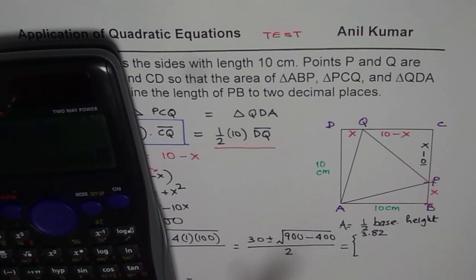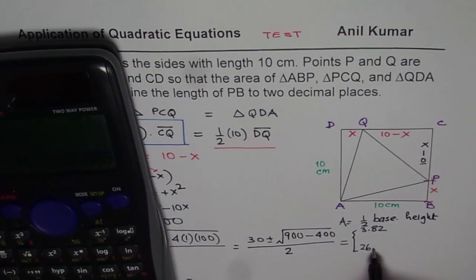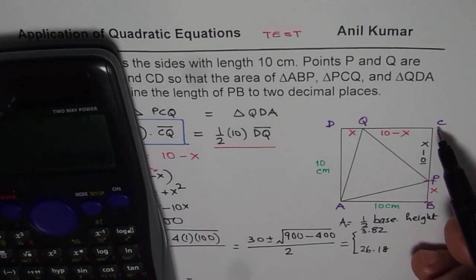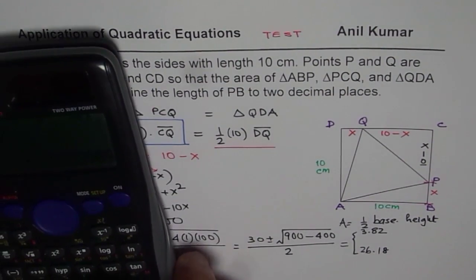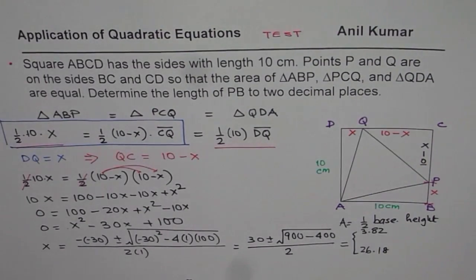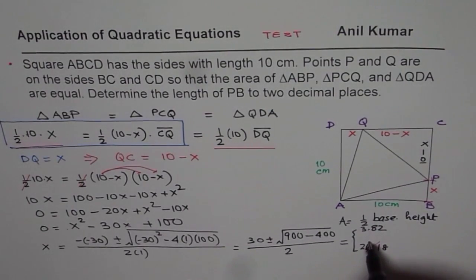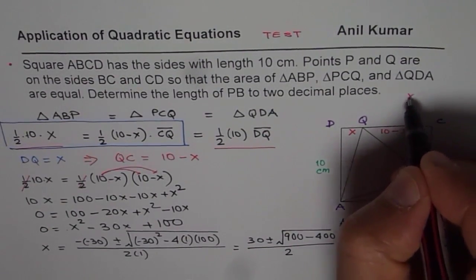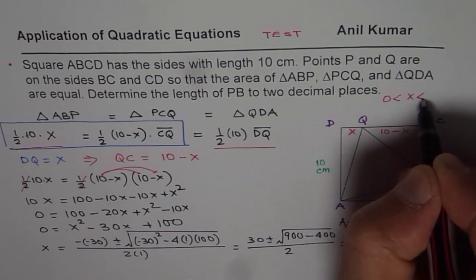The second solution could be 30 plus square root of 900 minus 400, equals to, divided by 2, equals to, in decimals, so that is 26.18. Well, the side length is only 10, so X cannot be more than 10. So this is not valid, so we will not take this, this is not valid.